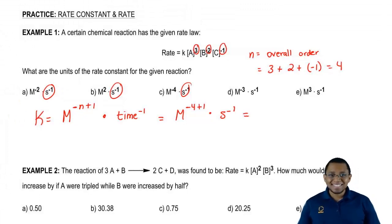Remember, time could be in minutes, in seconds, hours, it doesn't really matter. Then we're going to say here, negative 4 plus 1 is negative 3.